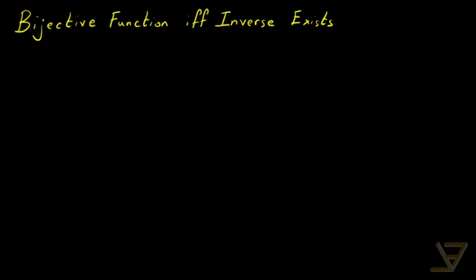Hi everyone, today we're going to be doing a proof about when a function is bijective. We'll be proving that a function is bijective if and only if it has an inverse. There are a couple of pieces of terminology here: one is the word inverse, the other is the word bijective, so we're going to be covering this terminology first.